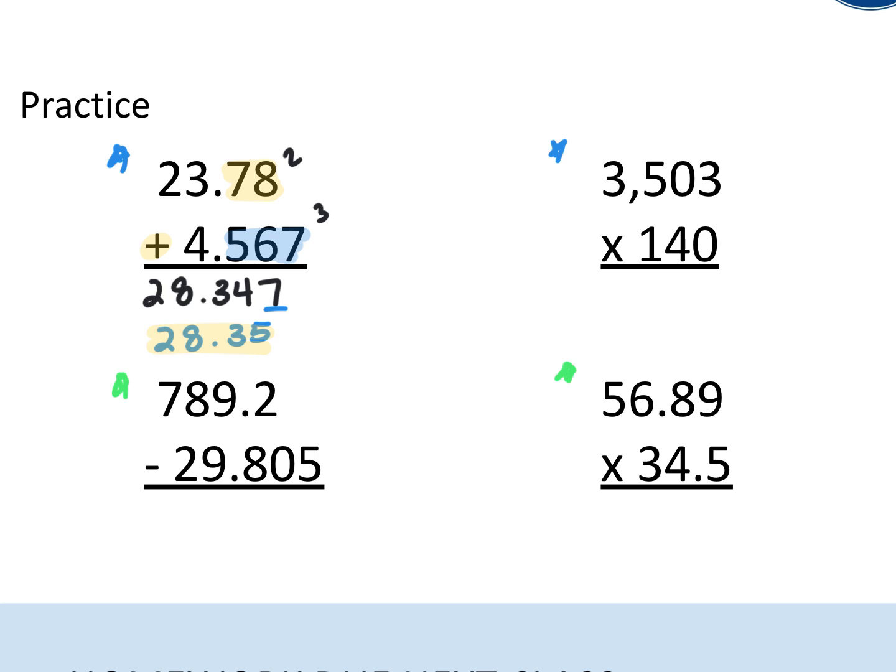Now moving to the next one, I'm looking at multiplication. I'll do the math. I'll do my 3,503 times 140 to give me an answer of 490,420. Because I am multiplying, I'm going to follow the rule for multiplication that states I need to simplify my answer to the fewest amount of sig figs.